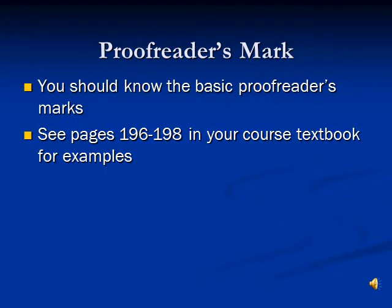The main proofreader marks are found in your textbook on pages 177 to 179, and you should know the main ones. I do not test you on them, but you do learn them in your proofreading and editing course. You should know the main proofreader marks because many physicians do use them — especially if you're helping them revise something like a research paper.